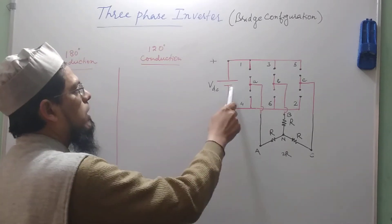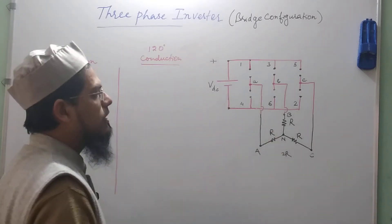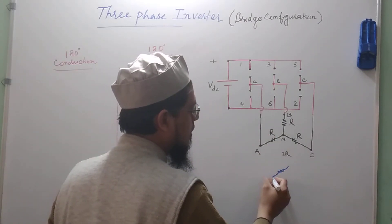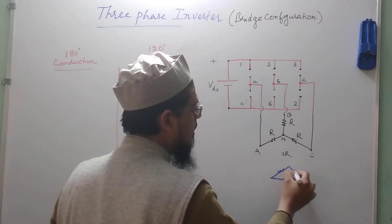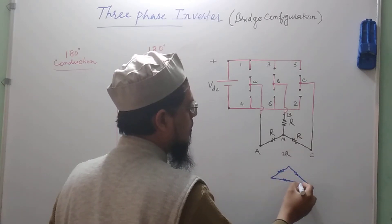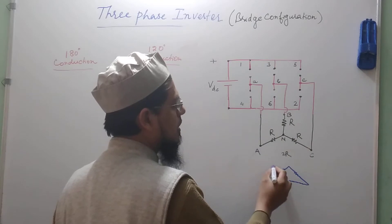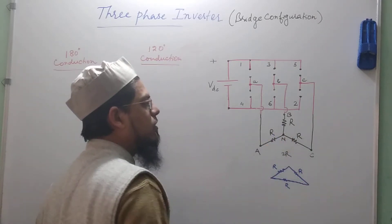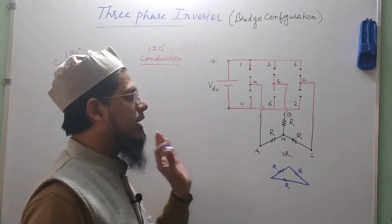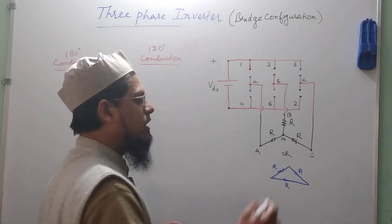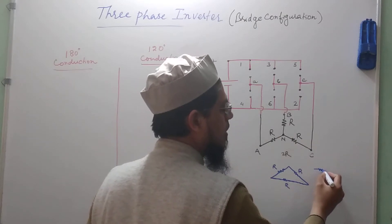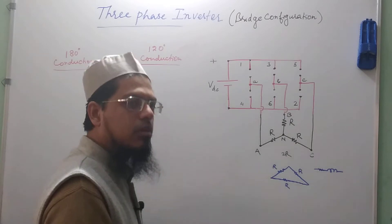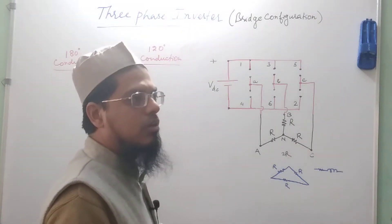We have one DC power supply and it can feed a resistive load, or it could be used to feed a delta-type load as well. This is a star-connected load and this is a delta-connected load. The load is balanced and of resistive nature, but it could even be RL type or RLC type of load, depending on the application.